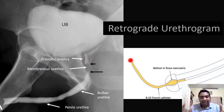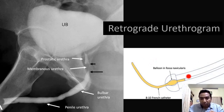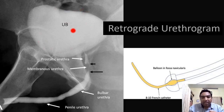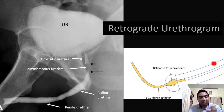For the external anatomy, we use a retrograde urethrogram. We place a small Foley's catheter at the glans, inflate the bulb, and inject dye. We can then clearly see the penile urethra, the curving of the bulbar urethra, the membranous urethra where there is the fossa navicularis, and the prostatic urethra which is slit-like — as well as the filling of the bladder, making sure there is no urethral obstruction.